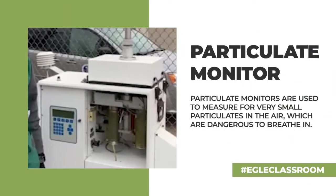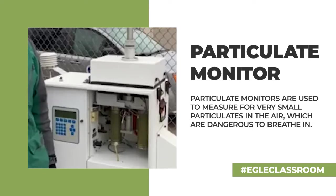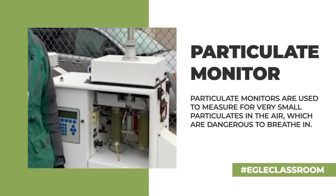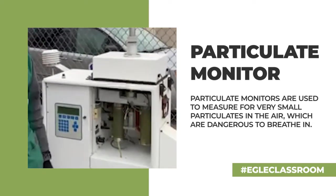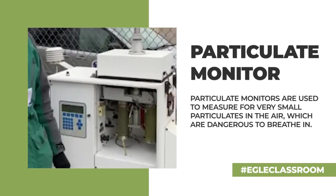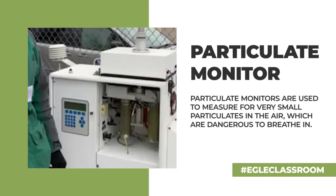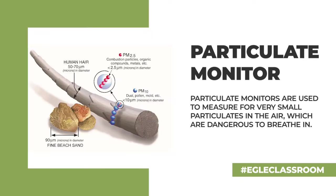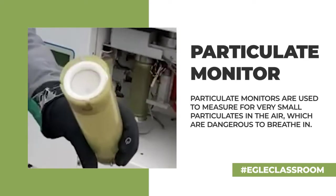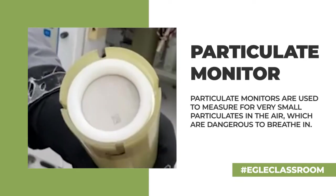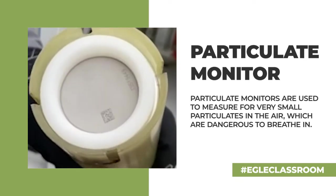Sometimes we want to collect a smaller size of particulate. This instrument filters out particulates larger than 2.5 microns or micrometers so that we can measure pollution that is 1/30th the size of human hair. These small particles can be really harmful if breathed into your lungs.